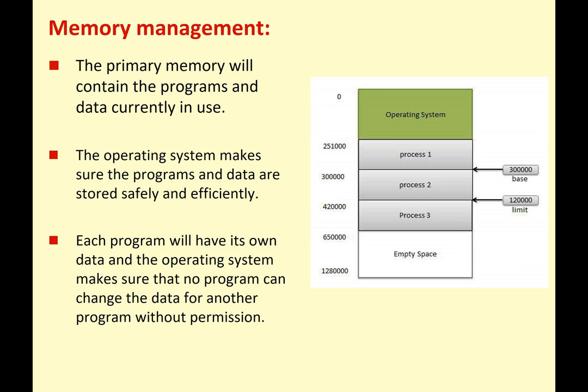The primary memory will contain all the programs and data currently in use. All the programs that you're running, all the data those programs are using, has to be resident in your RAM. The operating system has to make sure that programs and data are stored safely and efficiently. Each program will have its own data, and the operating system makes sure that no other program can change the data for another program without permission.